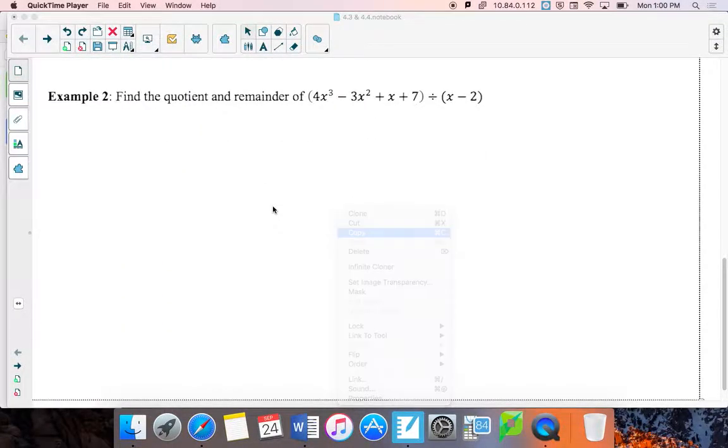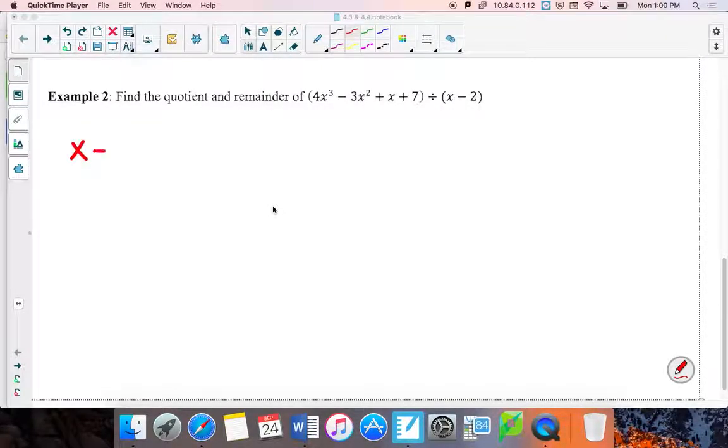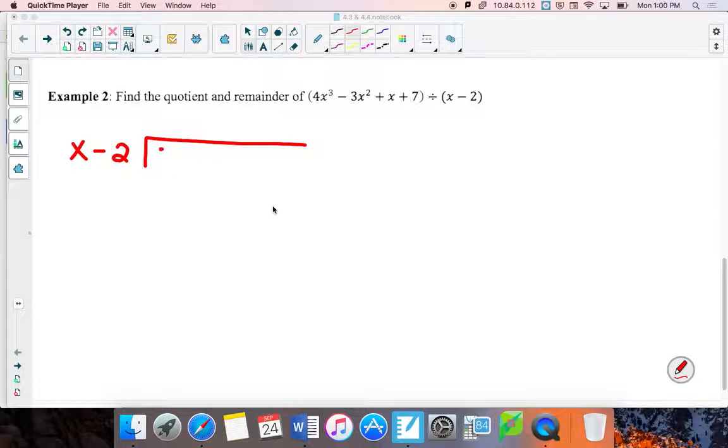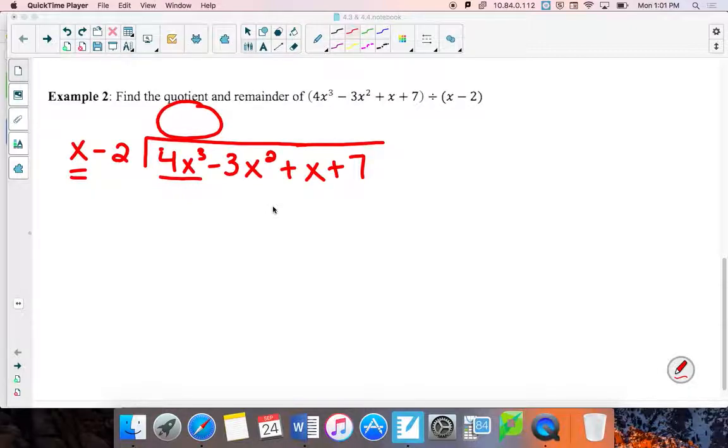Okay, so I'm going to divide x minus 2 into 4x cubed minus 3x squared plus x plus 7. All right, so we're going to take just that x value that's on the outside, and I want to figure out x times something is going to give me this 4x cubed. This x times that circle has got to give me that 4x cubed. That's going to be 4x squared. Now take that 4x squared and multiply him to both of those values. So that's going to give me this 4x cubed minus 8x squared.